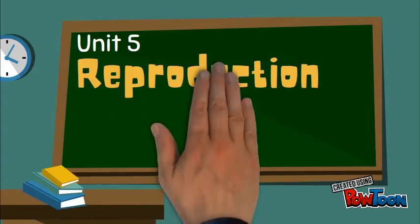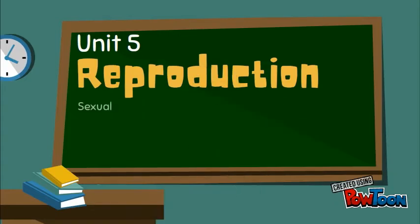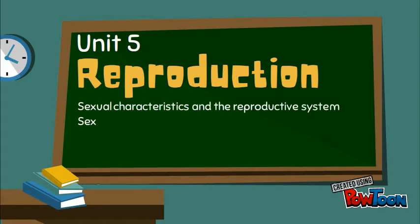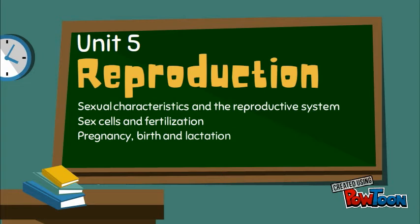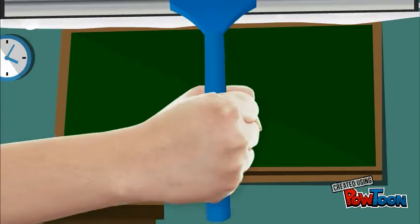Hello buddies, we are in unit number 5, which is reproduction. We are going to talk about sexual characteristics and the reproductive system, sex health and fertilization, and pregnancy, birth and lactation.